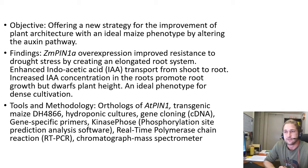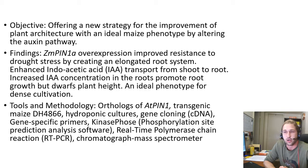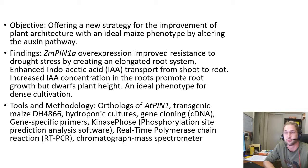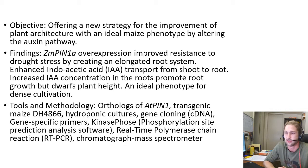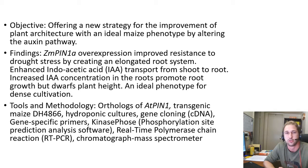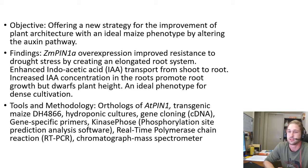They did find that ZmPIN1A overexpression improved resistance to drought stress. They observed an elongated root system, enhanced indole-3-acetic acid (IAA) transport from shoot to root — which is auxin — and increased root growth. However, this in turn dwarfed the plant height.